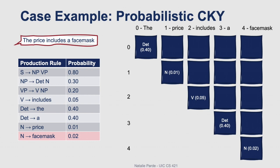First, we'll check the phrase "the price", so we're looking for a production rule that would match a determiner followed by a noun. We find that the noun phrase is a match, so to compute the probability for this cell, we'll take the probability of a noun phrase occurring and multiply it by the probability of a determiner occurring and the probability of a noun occurring, since those were the two constituents on the right-hand side. That gives us a probability of 0.0012.